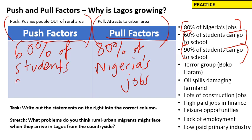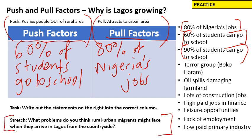Students can go to school is a problem in the rural area that pushes people to the city. Now pause the video. Complete the list organising into push and pull factors. There is then a stretch question: what problems do you think these rural urban migrants might face when they arrive in Lagos from the countryside? Please pause the video, complete your table and answer the stretch question.